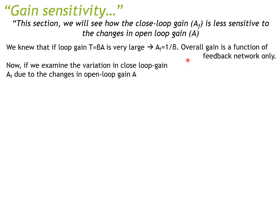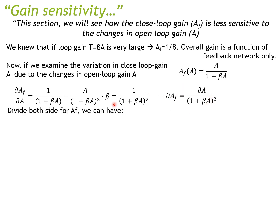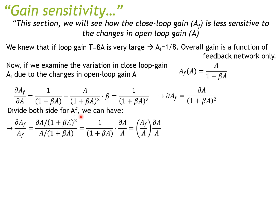Now if we examine the variation in closed loop gain Af due to the change in open loop gain A — so if I give you Af as a function of A, I can take the derivative of Af over A. I can write the resulting expression, and then if I multiply through by dA and divide both sides by Af, I can arrange the equation to isolate dAf over Af. You can work the math out yourself, but here's the key result.